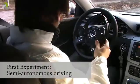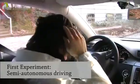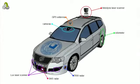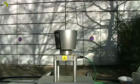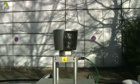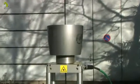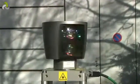In our first experiment, the test subject uses the sensor cap to give commands to our autonomous car. The car is equipped with video cameras, radars, and laser sensors that provide the car with a full three-dimensional view of its surroundings.